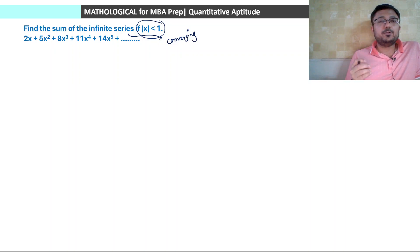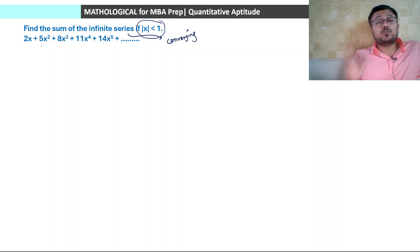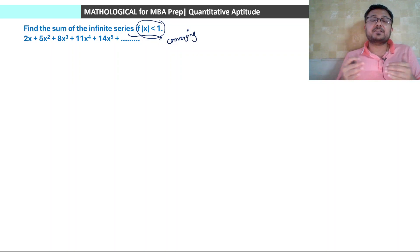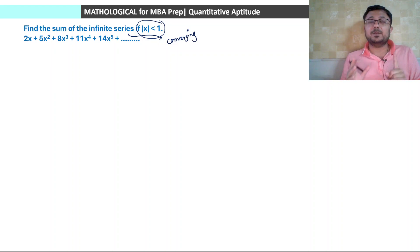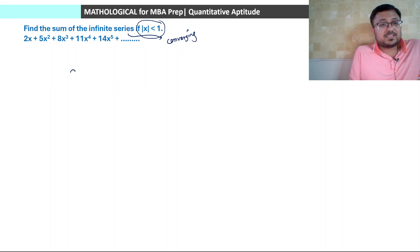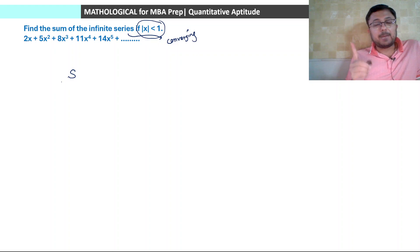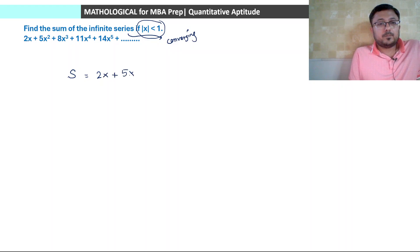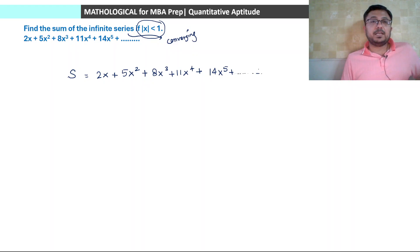The key idea: our purpose is to convert the AGP series into a GP. The coefficients 2, 5, 8, 11, 14 are in AP form. To eliminate the AP and get a GP, we observe that subtracting consecutive terms removes the common difference. We assume the total sum equals S. So S = 2x + 5x² + 8x³ + 11x⁴ + 14x⁵ + ... We need to convert this to a GP.